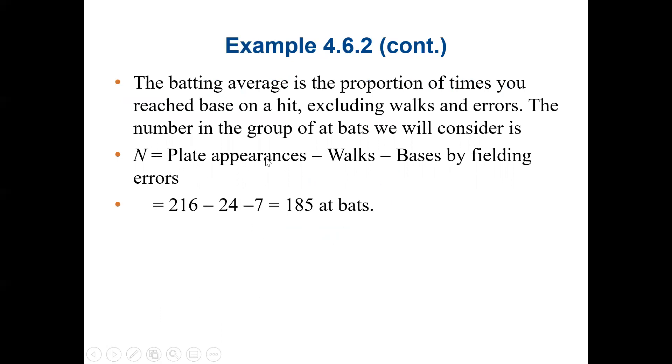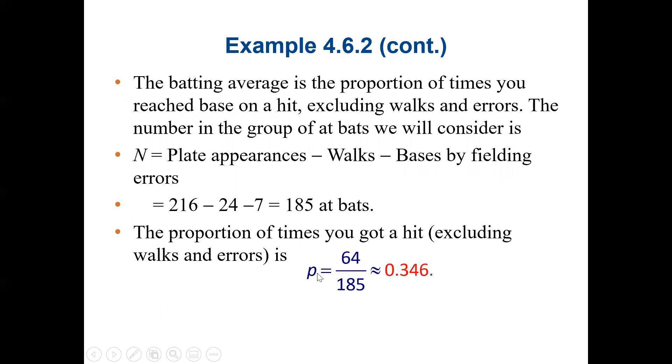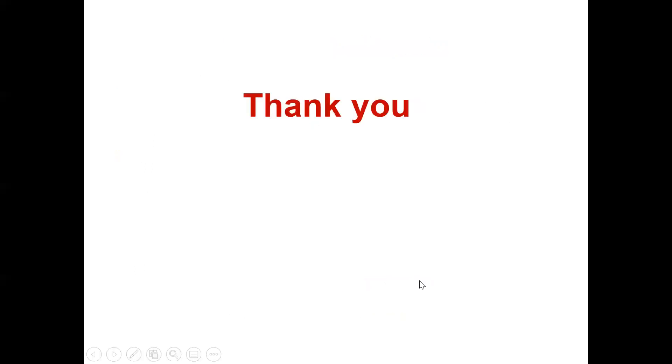Again, we saw this example - the plate appearance was 216, the walks was 24, and the errors was 7. So we subtract 24 and 7 from 216, that gives us 185. According to the question, we have 64 home runs. So 64 divided by 185 gives us 0.346, the value for the proportion. Percentage will be 34.6%, because 0.346 times 100 will give us 34.6%. So that will be the conclusion. Again, wish everybody the best.